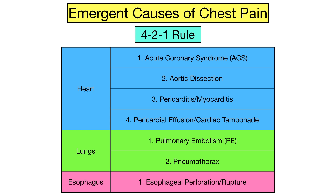Here's a table summarizing the 4-2-1 rule that can be used to remember some of the main emergent causes of chest pain. Remember there are 4 heart-related causes — ACS, aortic dissection, pericarditis or myocarditis, and pericardial effusion or cardiac tamponade — 2 lung-related causes — pulmonary embolism and pneumothorax — and 1 esophageal-related cause: esophageal perforation or rupture.